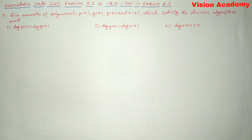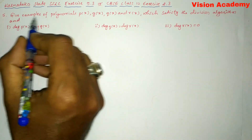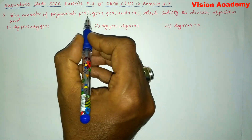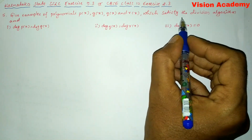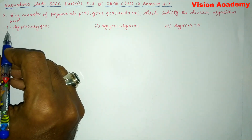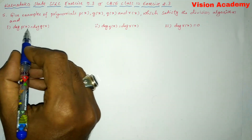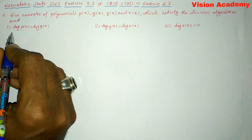Hello, my dear students. My name is Anumant Ladwa, welcome to Vision Academy. In this video we are going to solve Karnataka state SSLC exercise 9.3, or CBSE class 10 exercise 2.3, question number 5: give examples of polynomials p(x), g(x), q(x), and r(x) which satisfy the division algorithm. Roman number 1: degree of p(x) is equal to degree of q(x).